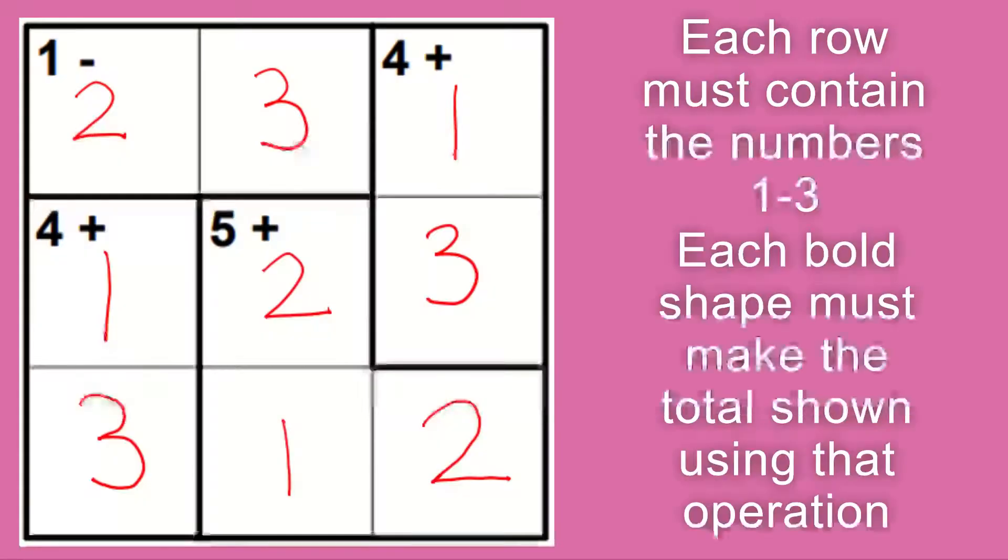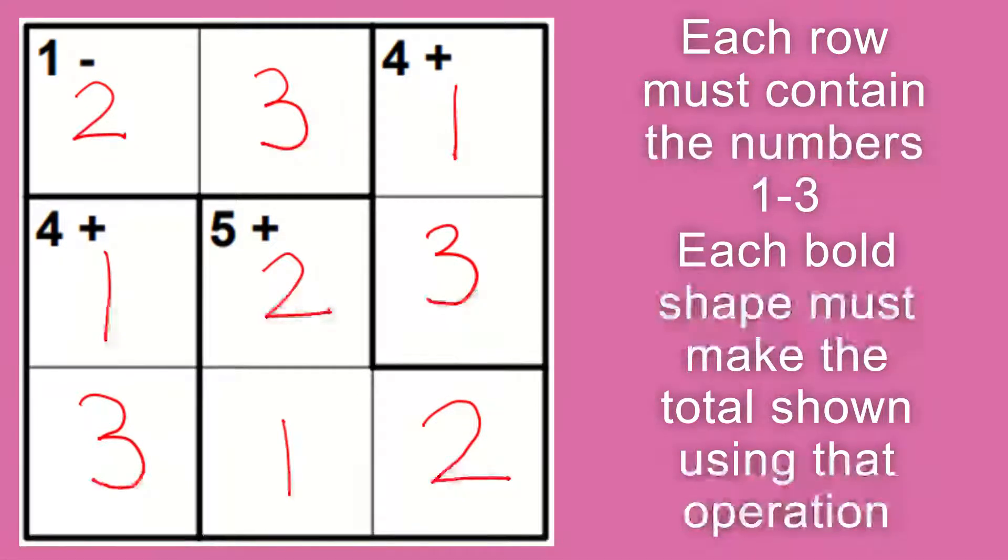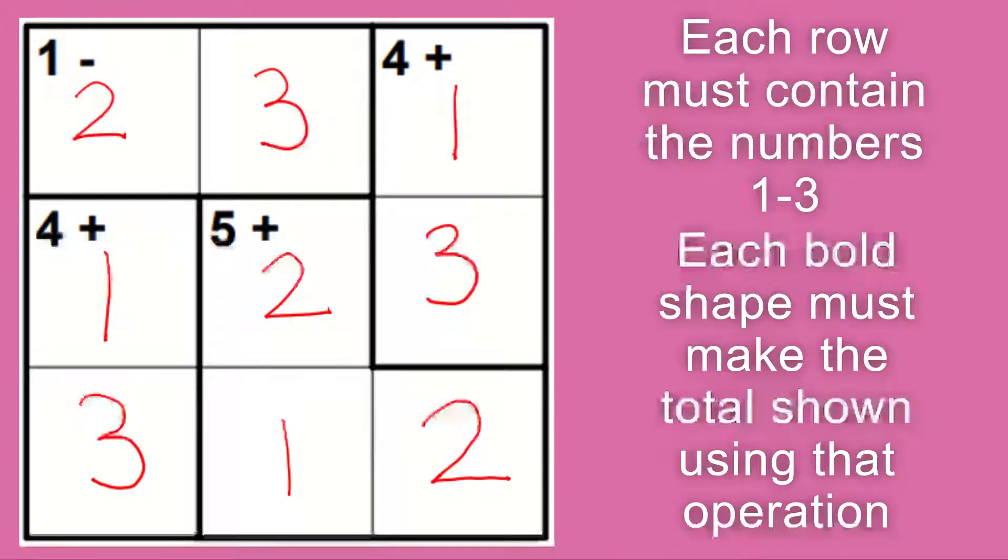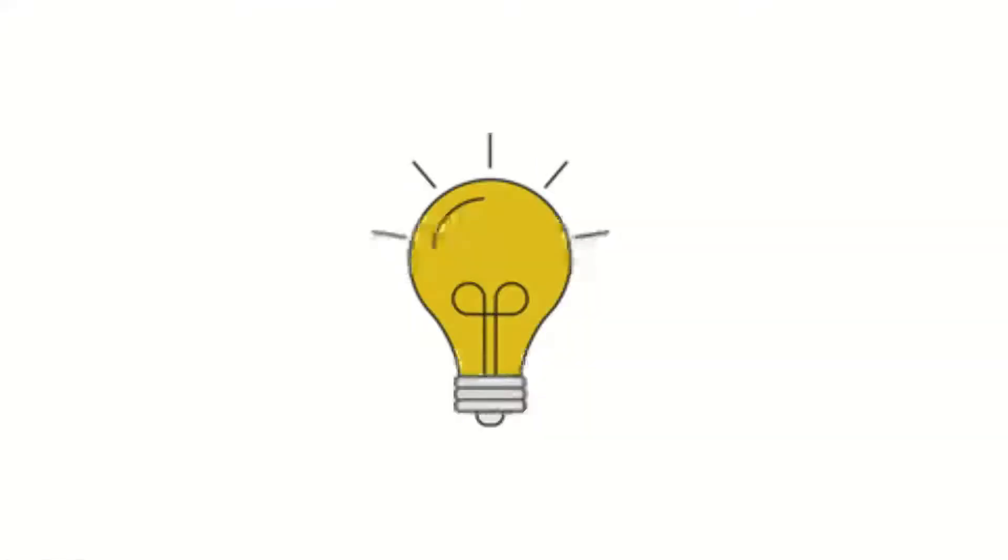Let's have a look at the answer to puzzle number two, which was your inky note. We've got one minus in the top left hand corner with the two numbers three and two. Three minus two will give you one, so that's how that's working. The other shapes - the numbers in that shape add up to the total given.